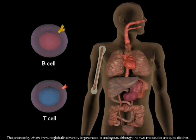The process by which immunoglobulin diversity is generated is analogous, although the two molecules are quite distinct.